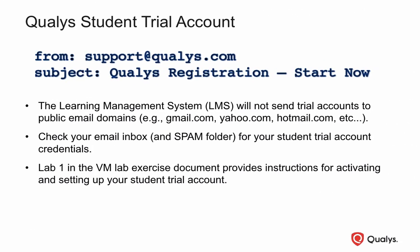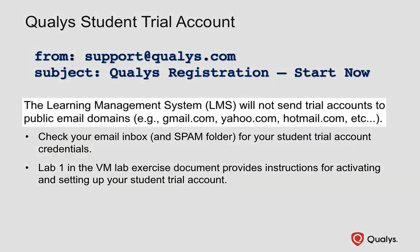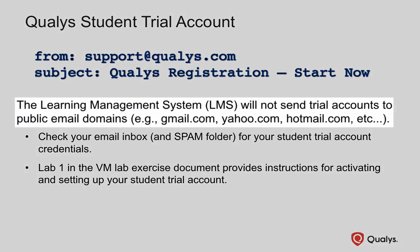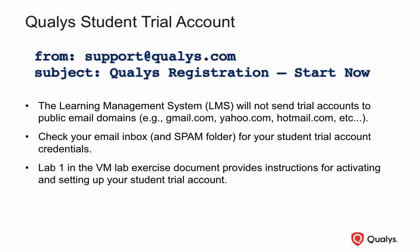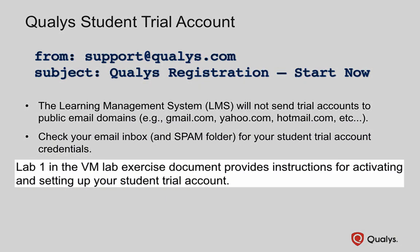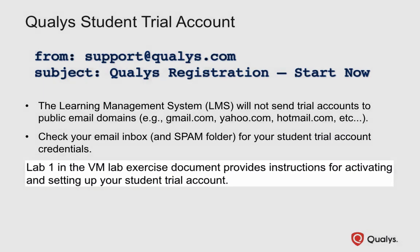To perform the lab exercises in this course, each participant is provided with a Qualys student trial account. The account credentials are sent to the email address identified in your learner account user profile. Please note, the Learning Management System will not send a student trial account to a public email domain. Be sure to check your spam or junk mail folders for your student trial account credentials. You'll find instructions to activate and set up your student trial account in Lab 1 of the Lab Exercise document.